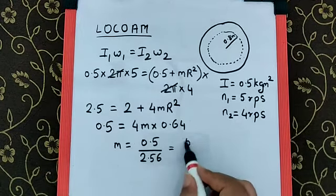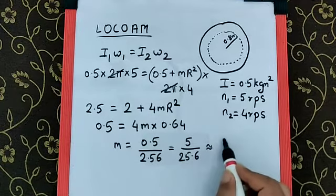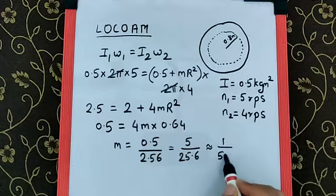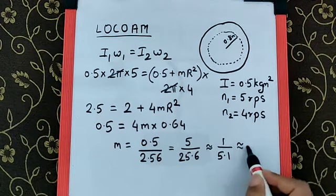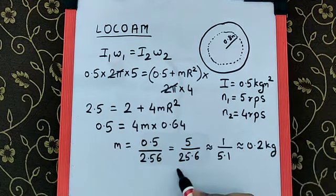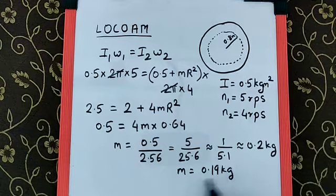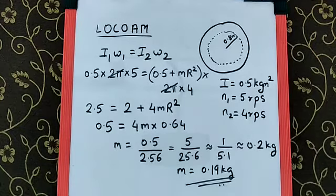Now, that can be written as 5 upon 25 by 6, which is approximately 1 upon 5.1, which is somewhere close to 0.2 kg. Now, the closest option we have in the option is 0.19 kg and that is the final answer.